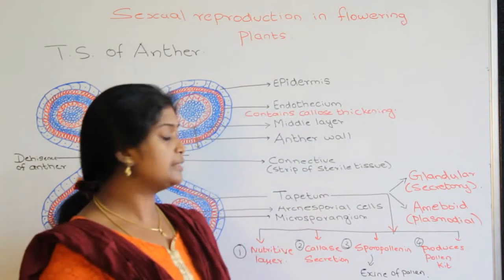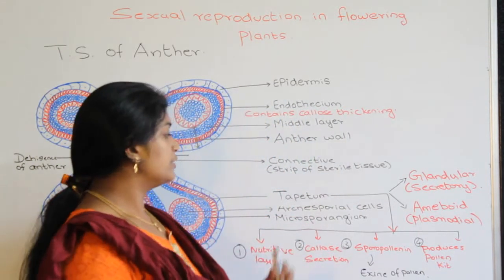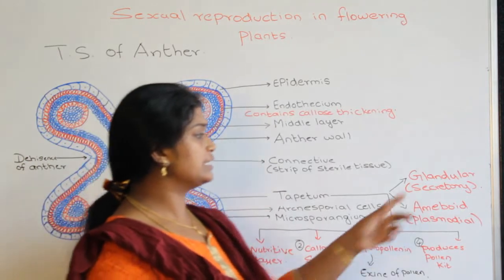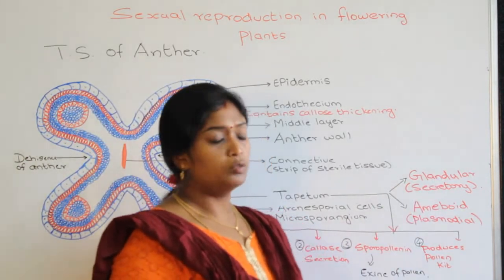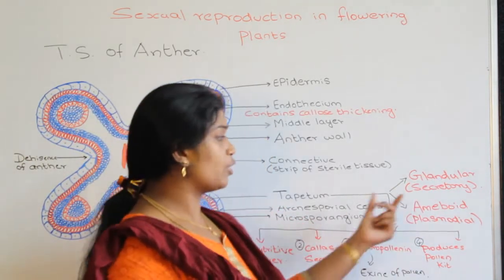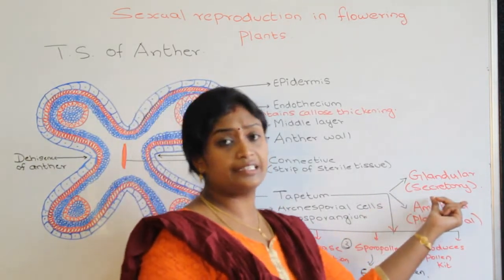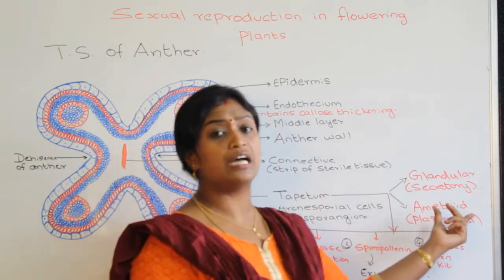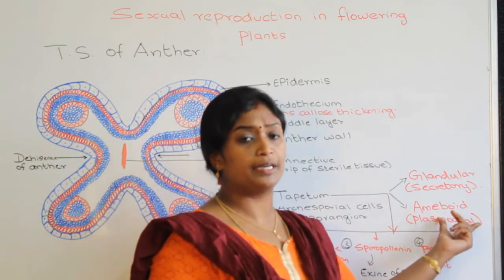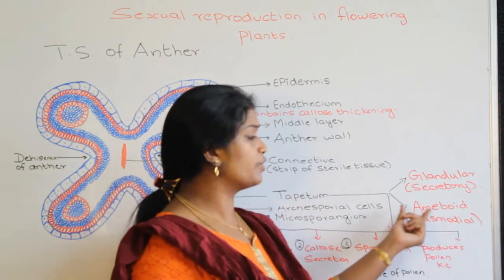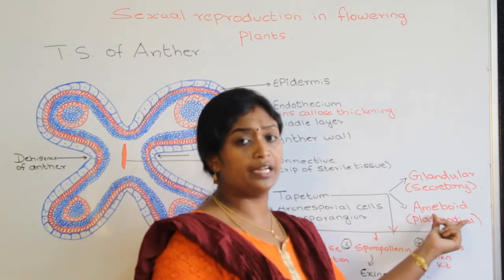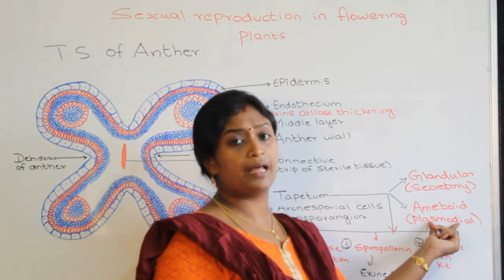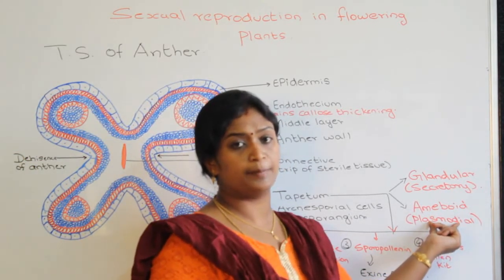Next, let's see the different types of tapetum. The first is the glandular tapetum, which is otherwise called the secretory tapetum. The second type is called the amoeboid tapetum, which consists of multinucleated cells and is therefore otherwise called the plasmodial tapetum.